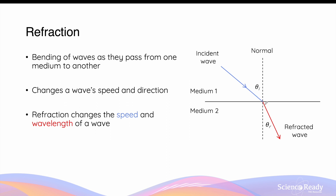When the light ray begins to travel in the second medium, its direction of propagation — that is its velocity — changes. As a result, the angle that the light ray makes with the normal is now different to the angle of incidence. This angle is referred to as the angle of refraction.